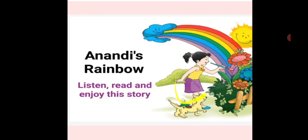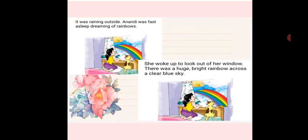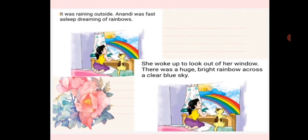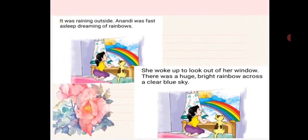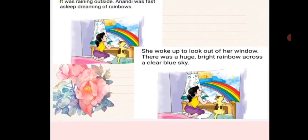The story is about a little girl called Anandi and her rainbow. It was raining outside. Anandi was fast asleep, dreaming of rainbows. She woke up to look out of her window and there was a huge, bright rainbow across a clear blue sky. Can you see the picture? Anandi is looking out of the window and she can see the beautiful, colorful rainbow.